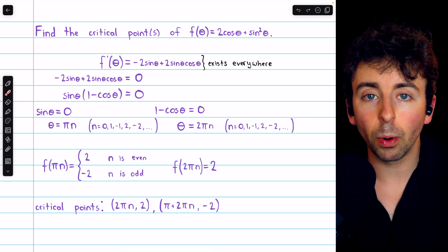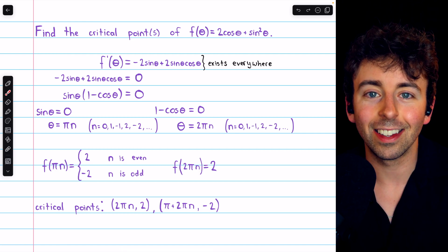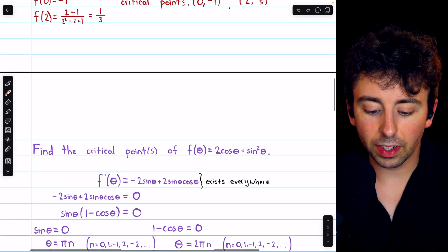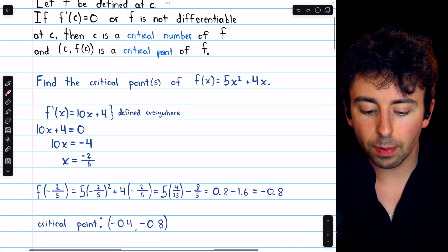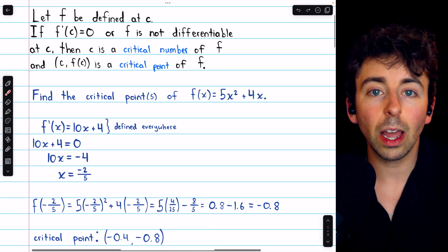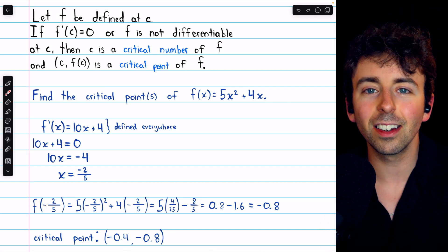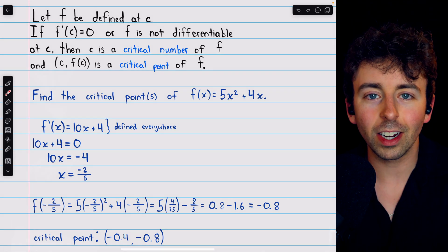And at all of these points, the derivative of the function is 0. So those are a couple of examples of finding the critical points of a function. Let me know in the comments if you have any questions, and be sure to check out my Calculus 1 course and Calculus 1 exercises playlists in the description for more. Thanks for watching.